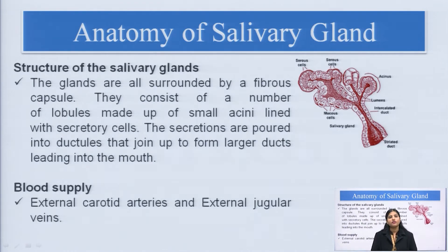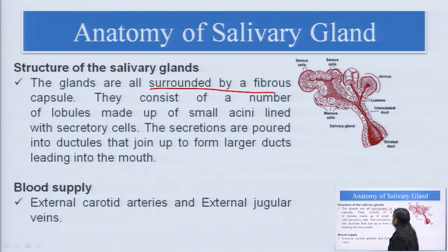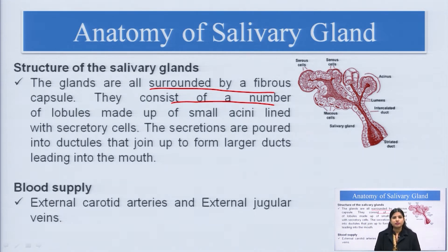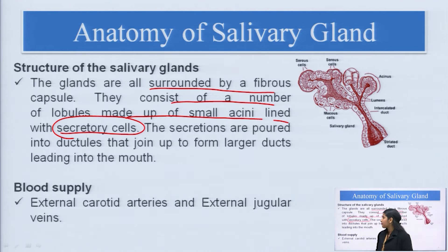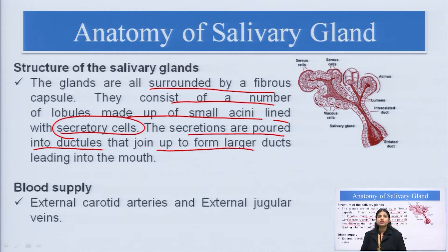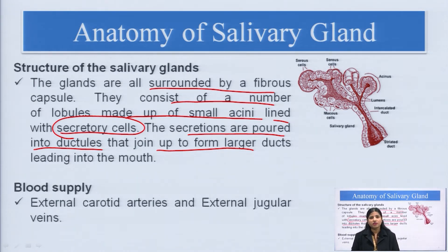Coming to the structure of salivary glands — these glands are surrounded by a fibrous capsule and consist of a number of lobules. These lobules are made up of small acini, which are lined by secretory cells responsible for secretions. The secretions are poured into ductules that join up to form larger ducts, which lead to the mouth, pouring secretions into it. Those secretions are enzymatic secretions that help in the metabolism of food.